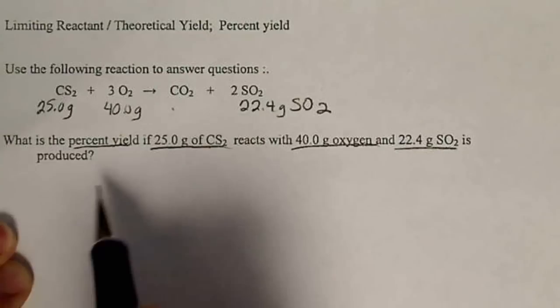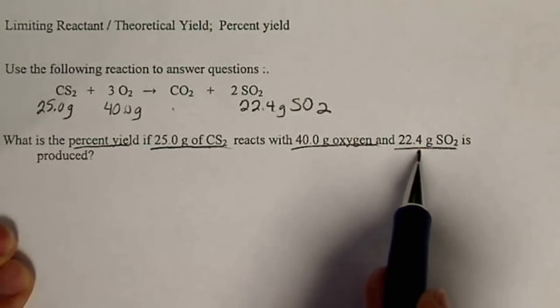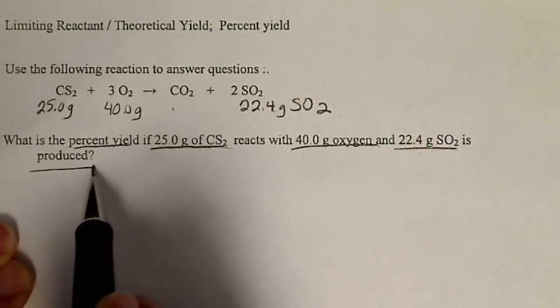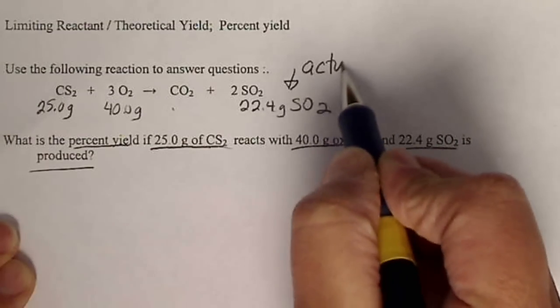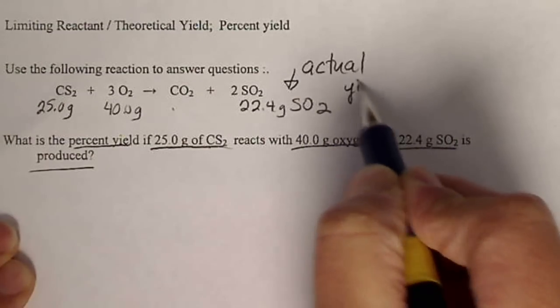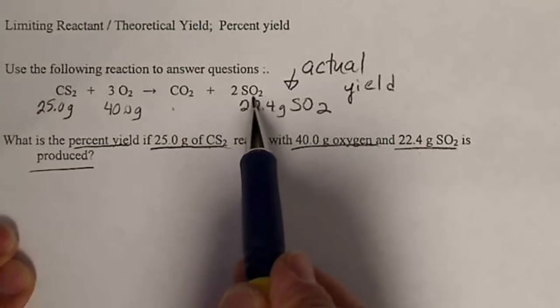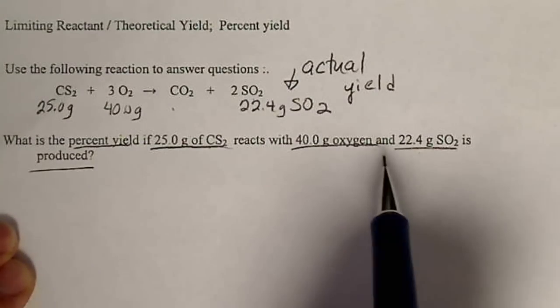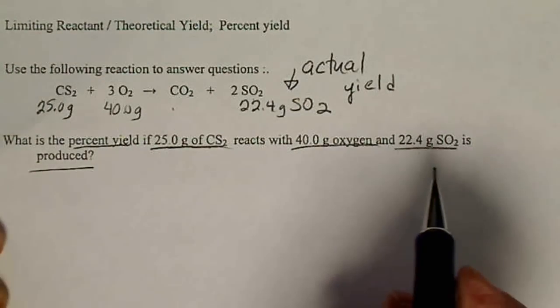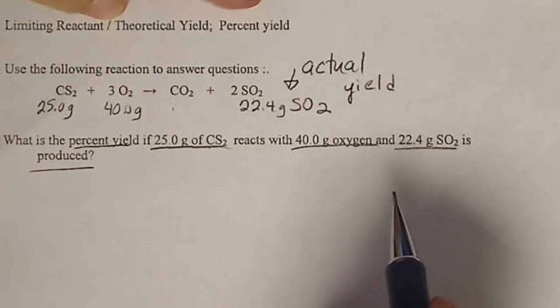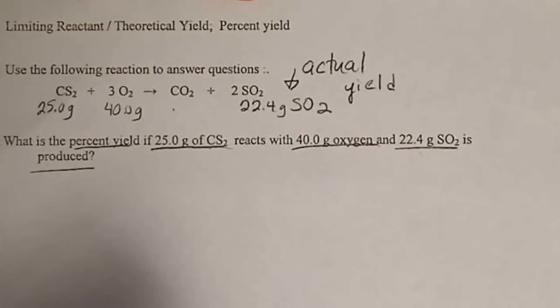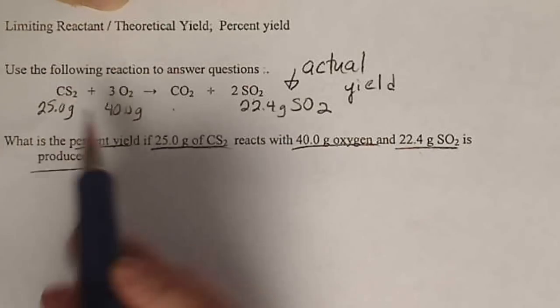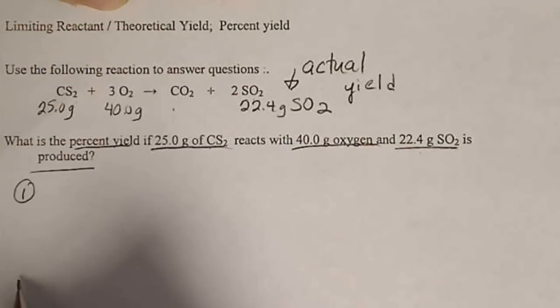It says that 22.4 grams of SO2 is produced. This means that this is the actual yield. If we're ever given a value for a product, then that's definitely going to be an actual yield. In order to calculate the percent yield, we're going to need the theoretical yield. So we're going to take each reactant and do two separate three-step calculations.